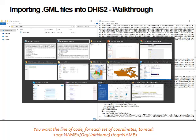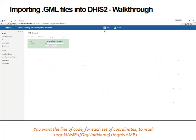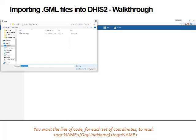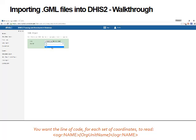Once I've done that, I pop over to DHIS2, go into the Import and Export app, and select GML Import. I'll see this screen, choose my file — Canada provinces — and we normally suggest doing a dry run first. If you know exactly what you're doing, or once you've done your dry run, you can set it to no. I'm not going to show what that looks like because Canada is a very large country and it'll take a long time to import. But that is the process for making sure your GML file will connect to and be understood by your DHIS2 instance.